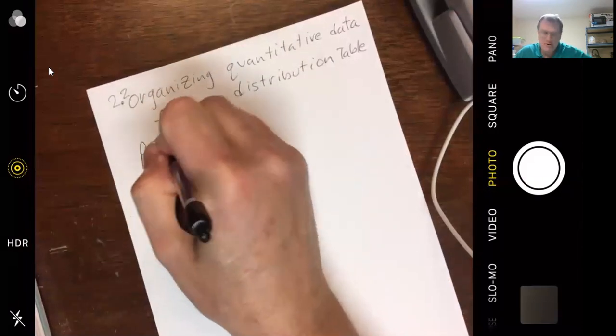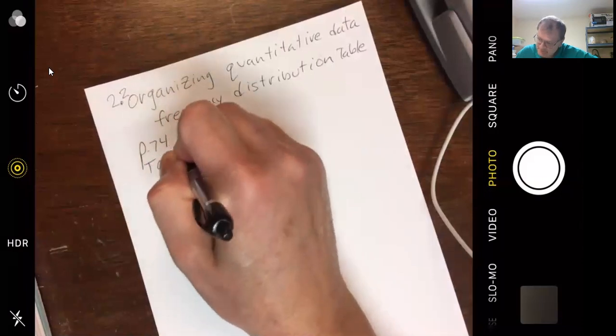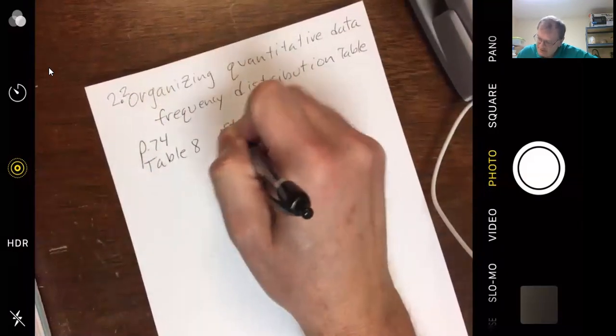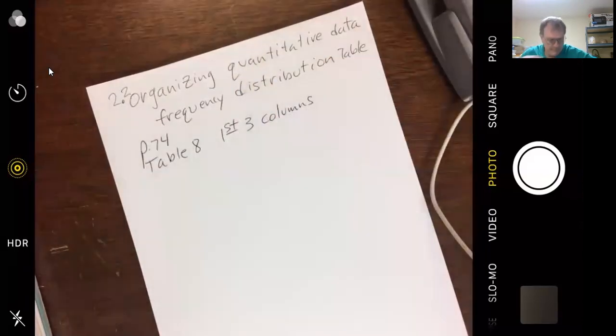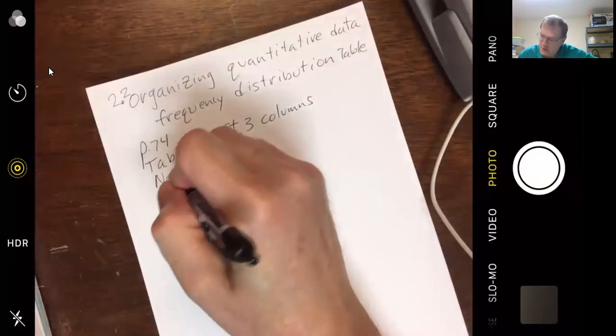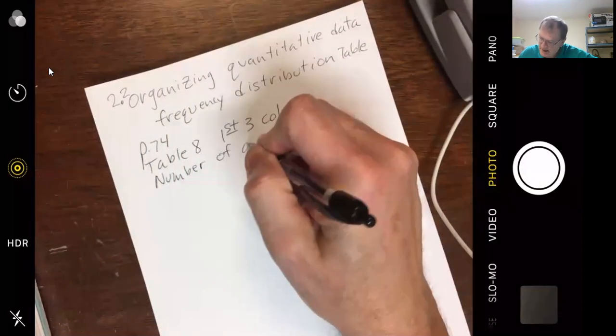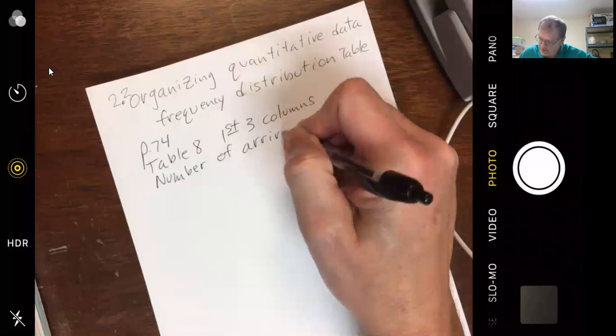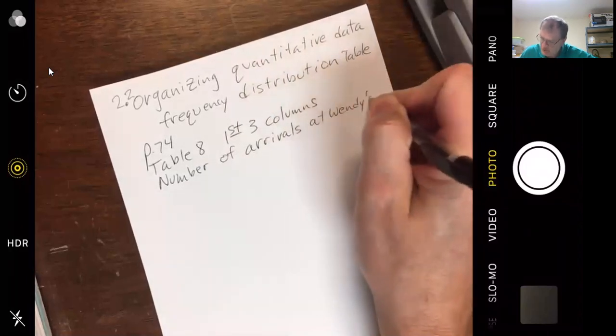This is arrivals at Wendy's during the lunch hour. I don't know if I want to copy all this down, but there's a sample data table. Typical number of arrivals at lunchtime at Wendy's. So, he selects 40 randomly selected 15 minutes of intervals of time during lunch. For example, during one 15 minute interval, seven customers arrived. So, there's the data. That's probably a little long. Why don't I do the first three columns? I can handle that. This is page 74. Table 8.